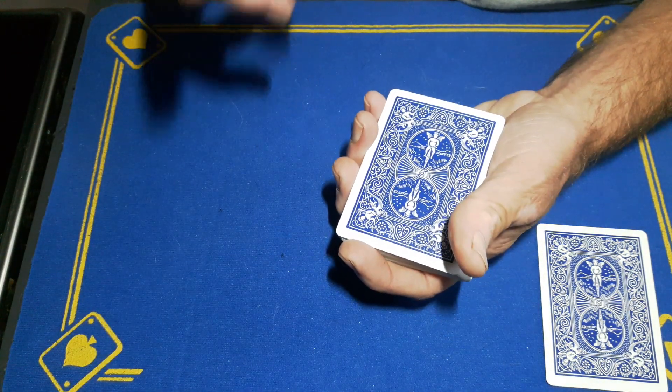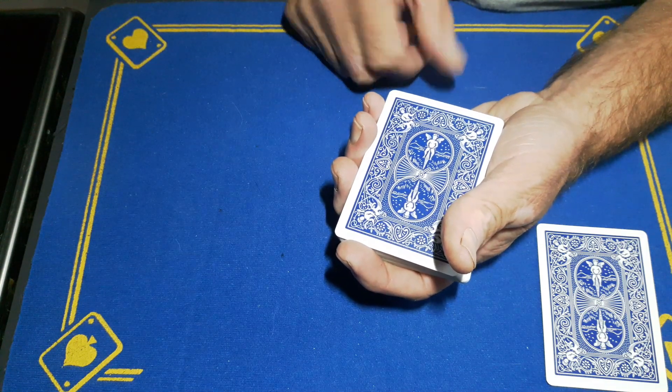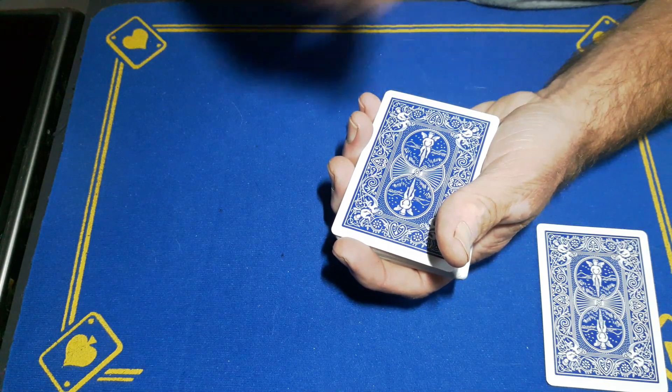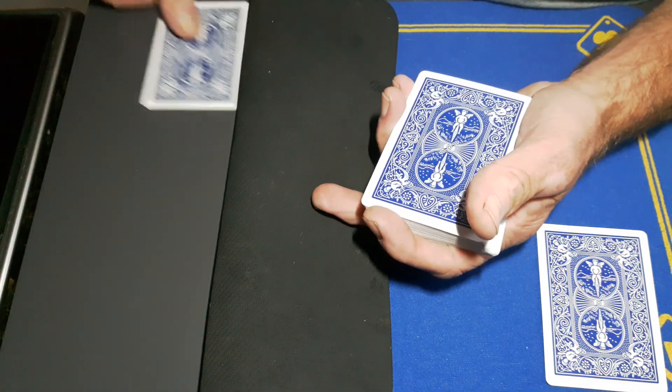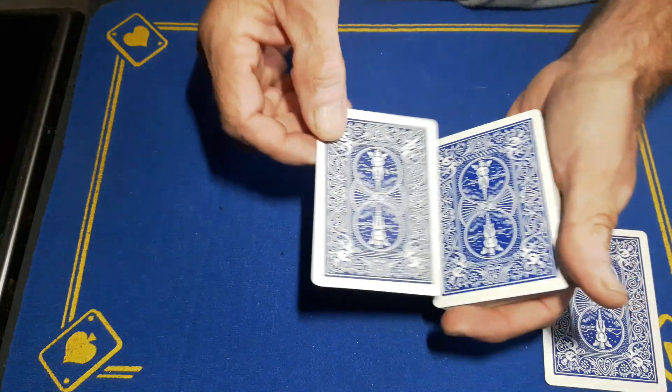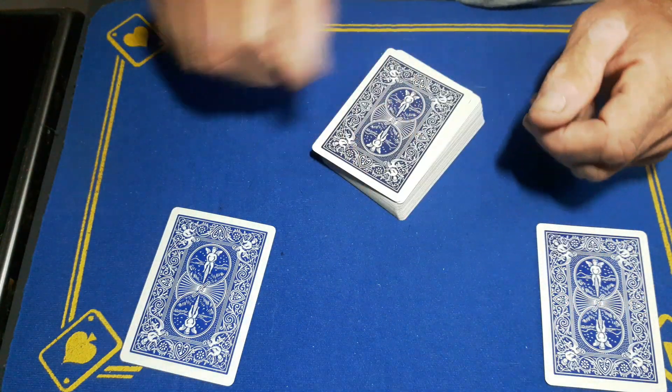Wouldn't it be incredible if the signed card ends up underneath the card mat? Although you can see it right there. Let me just show you. The random location is under the card mat. Wouldn't it be mad if this was your signed eight of clubs?